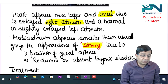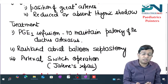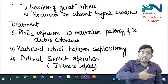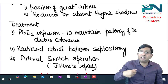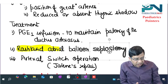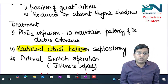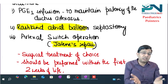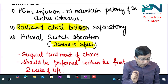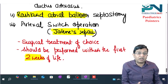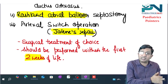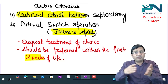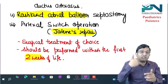If a child with TGA presents, first start prostaglandin E1 infusion to keep the ductus arteriosus patent so the aorta receives blood. If insufficient, perform balloon atrial septostomy — a catheter is passed to the right atria, then left atria, and the inter-atrial septum is ruptured (Rashkind balloon atrial septostomy). This is the emergency procedure in TGA. The definitive surgery is the arterial switch operation (Jatene repair), switching the aorta back to the left side and pulmonary artery to the right side. It must be performed within the first two weeks of life, before left ventricular pressure drops due to decreasing PVR.